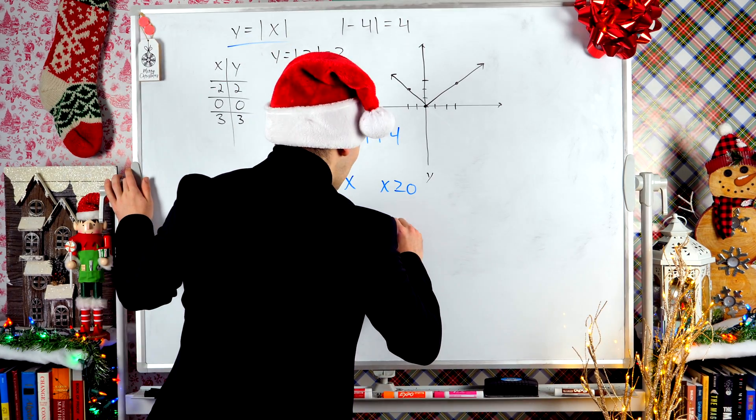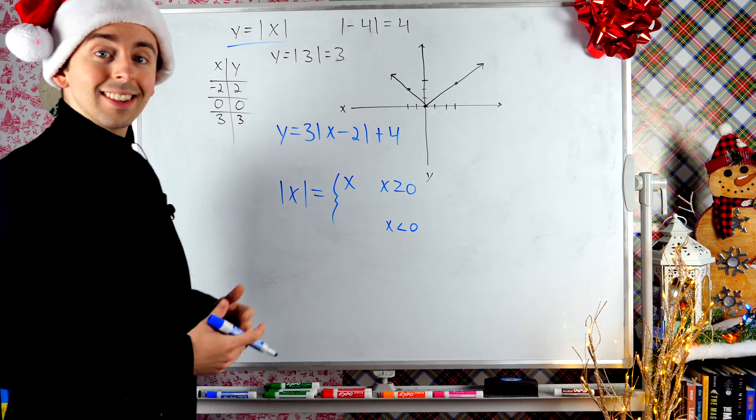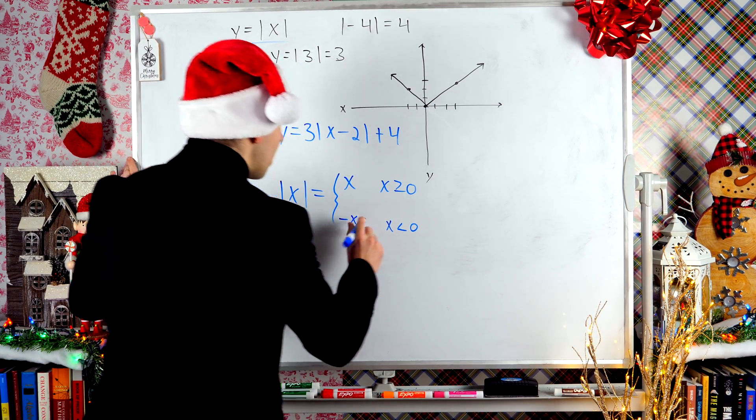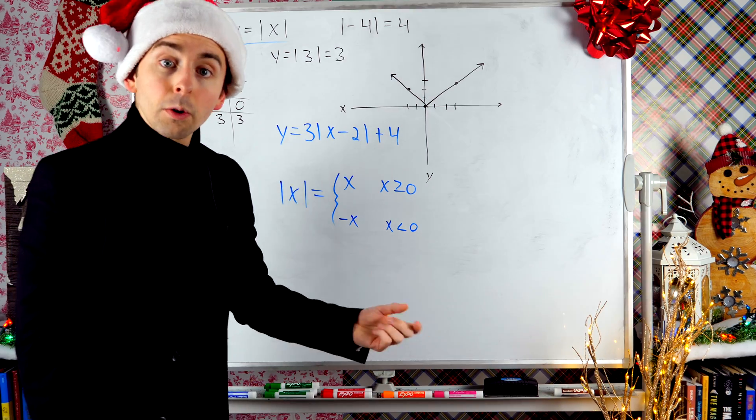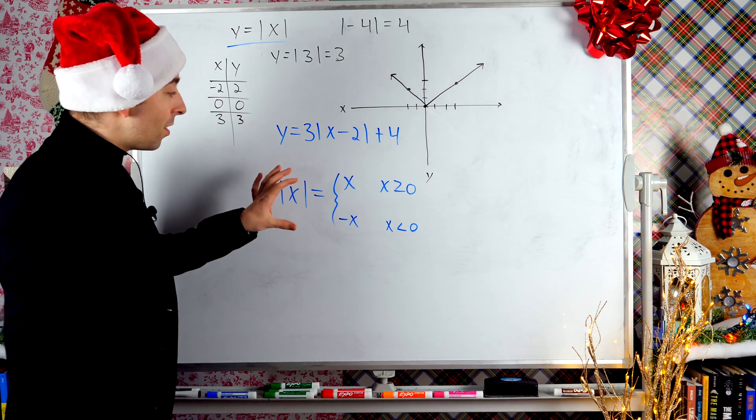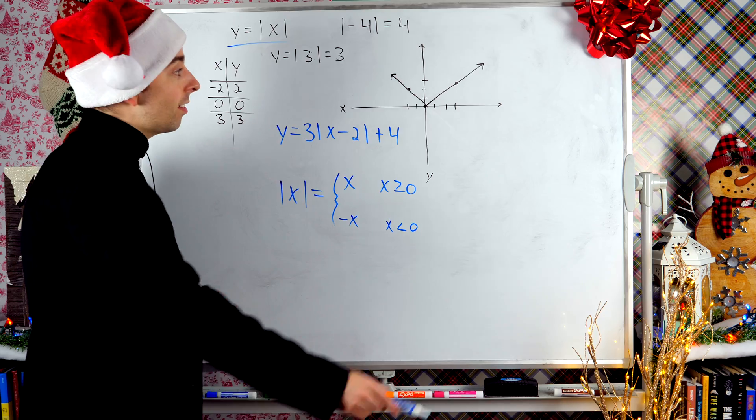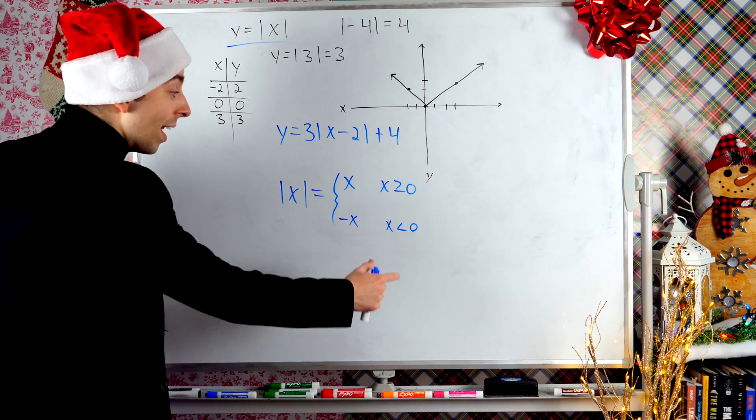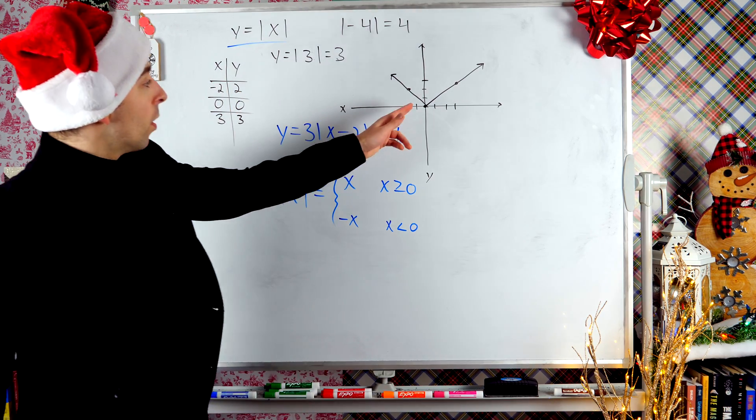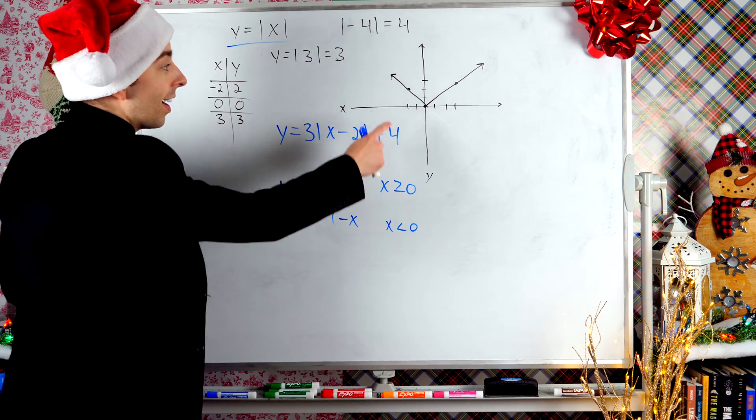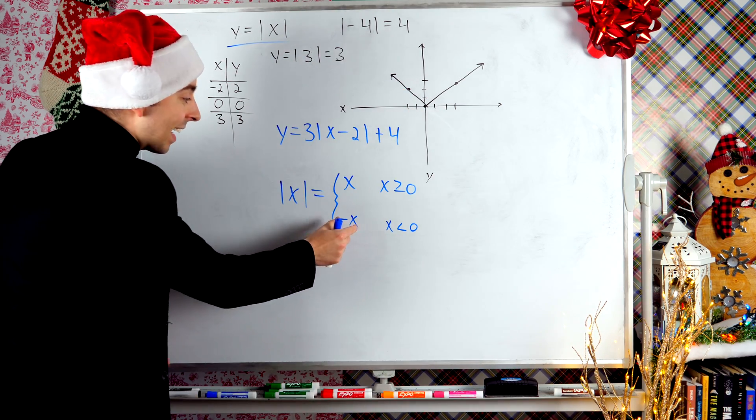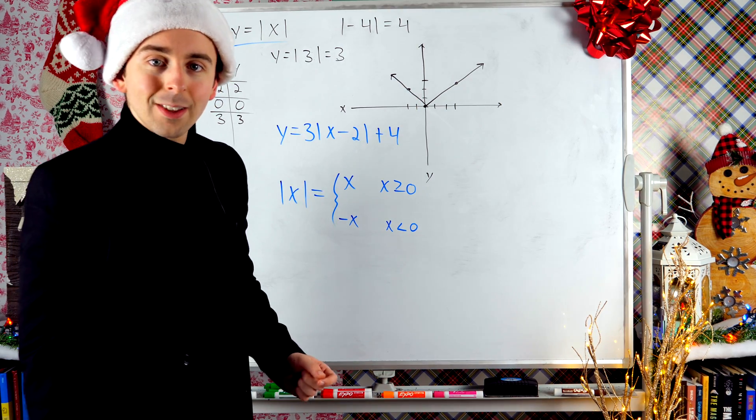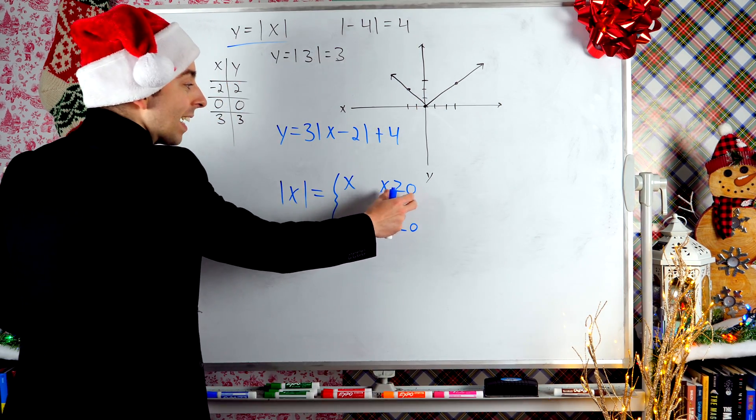On the other hand, if x is negative, so x is less than 0, then the absolute value of x will multiply it by negative 1 in order to make it positive. Now, do you see any connection between this and our graph of absolute value of x? Well, when x is less than 0, over here on the left, we've got the line negative x. A line with a negative slope of 1. That's what you've got for negative x values.